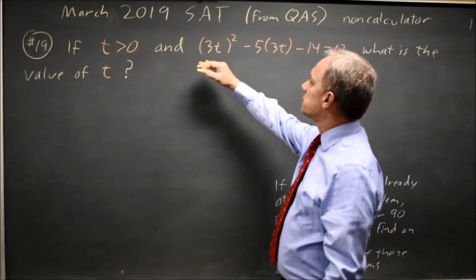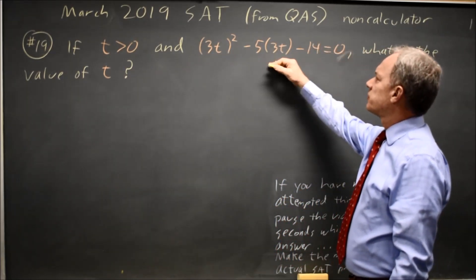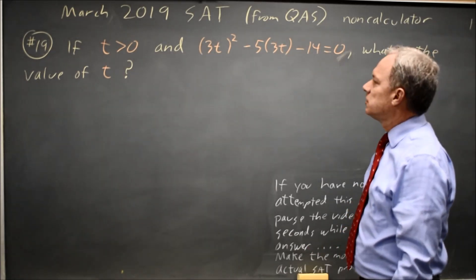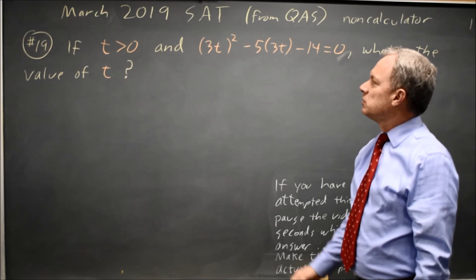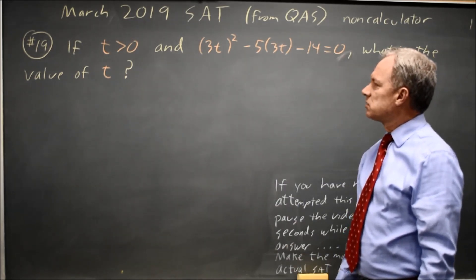In this case, they're asking if t is greater than 0 and 3t squared minus 5 times 3t minus 14 equals 0, what is the value of t? One option is to multiply this out and then solve.